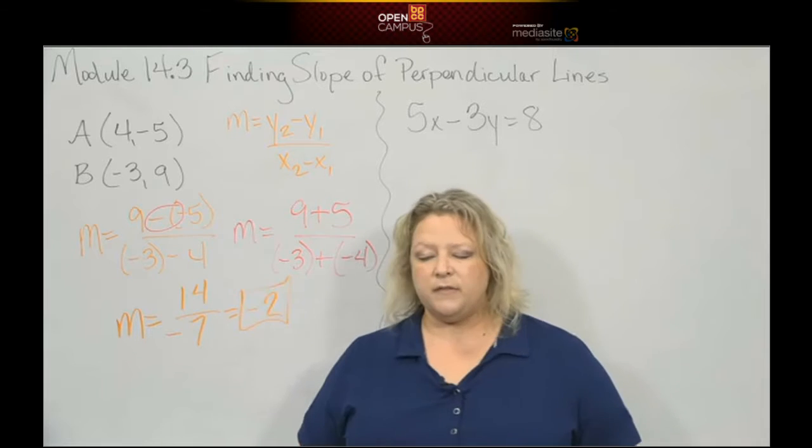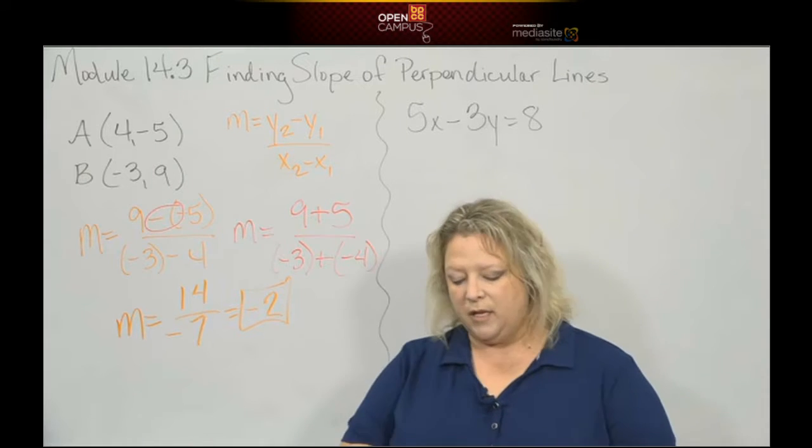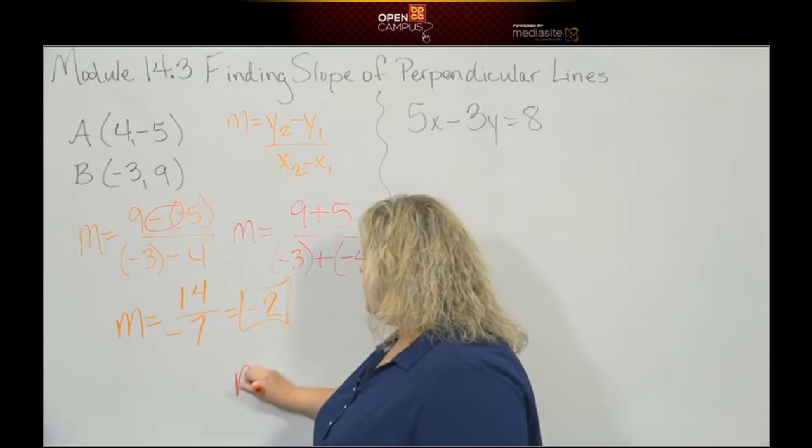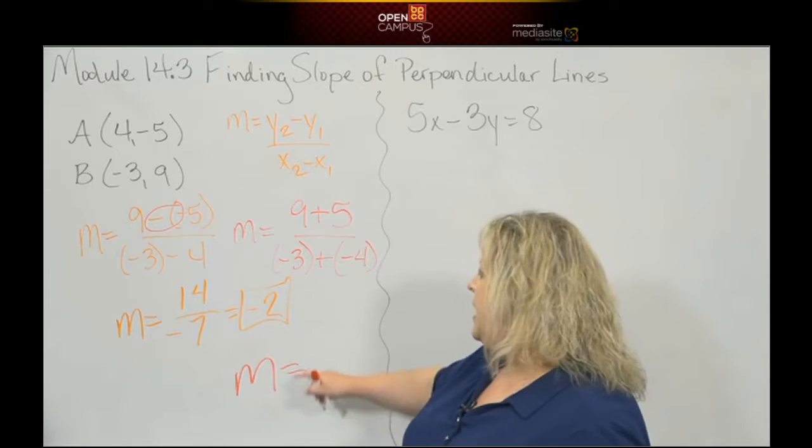Okay, if I was doing parallel I'd stop because I'm using the same slope. But if I want perpendicular, perpendicular slope means to change the sign so it's going to go from a negative to a positive, and then it means to do the reciprocal.